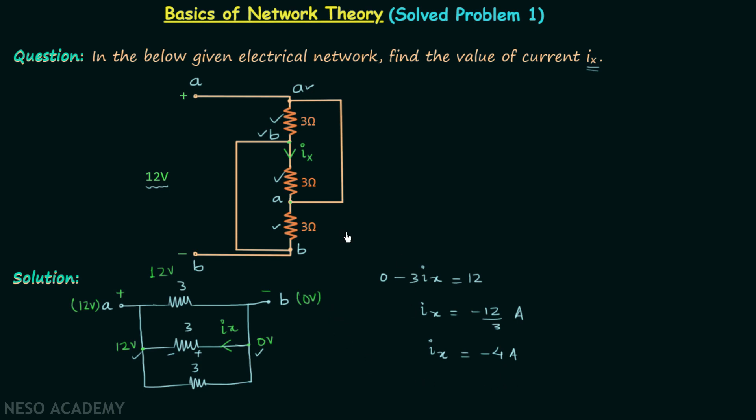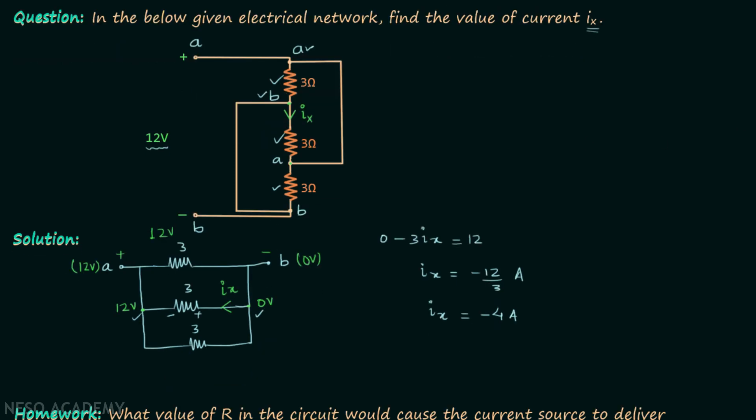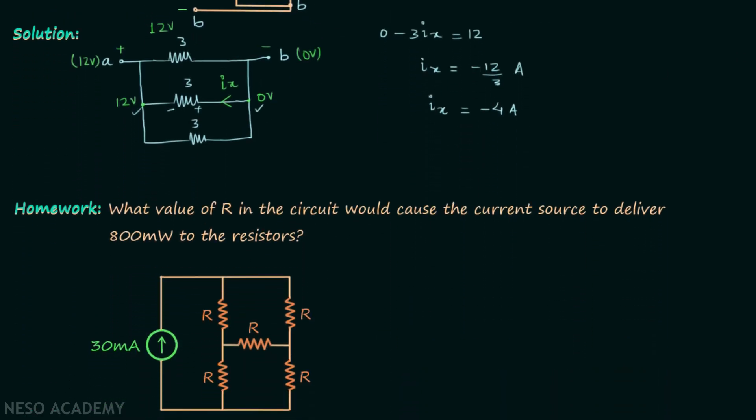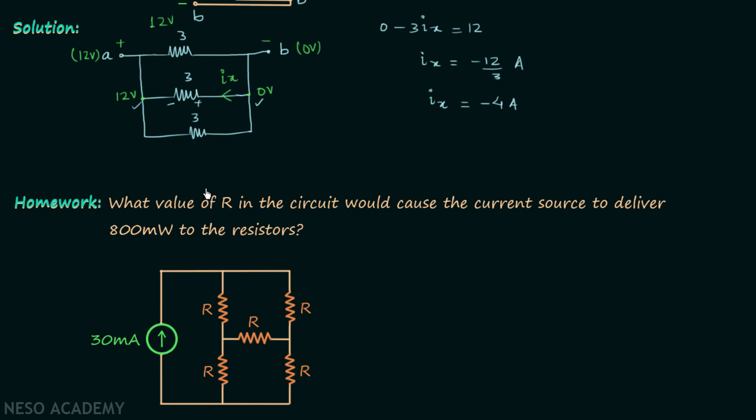So I hope the solution of this problem was clear to you. Now we will move on to our homework problem. In this homework problem, you need to find the value of R in the circuit when the current source is delivering power equal to 800 milliwatts to the resistors. Here is the current source providing 30 milliampere of current, and when it is delivering 800 milliwatts power to the resistors, you need to find out the value of R.